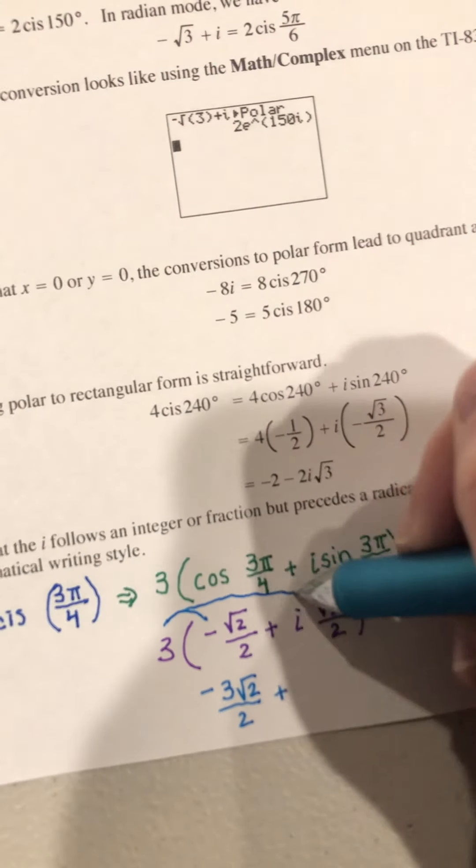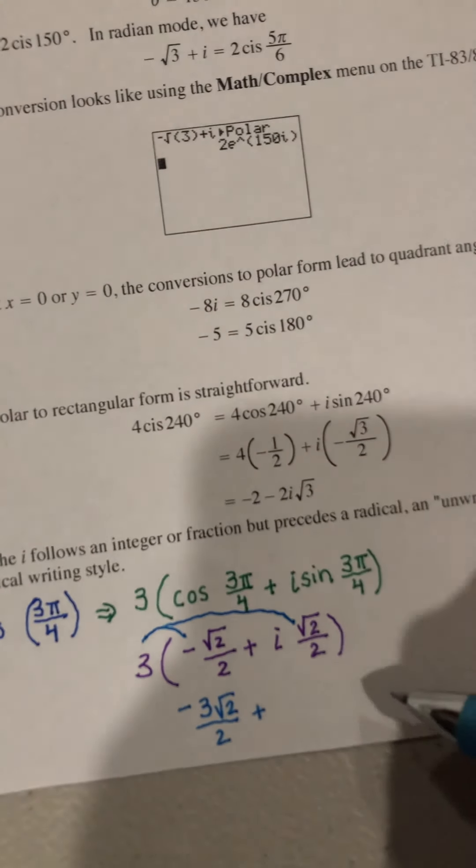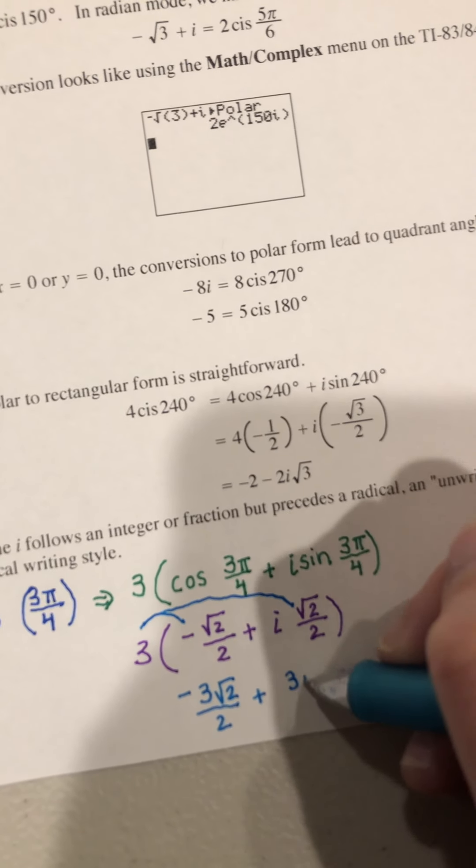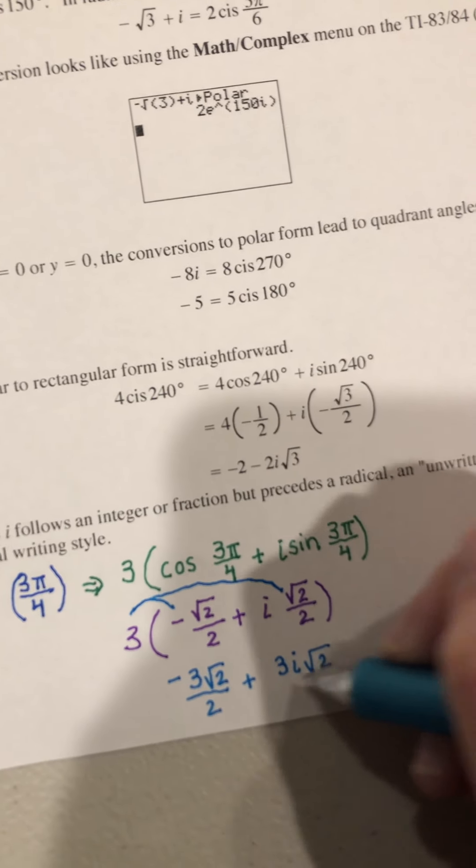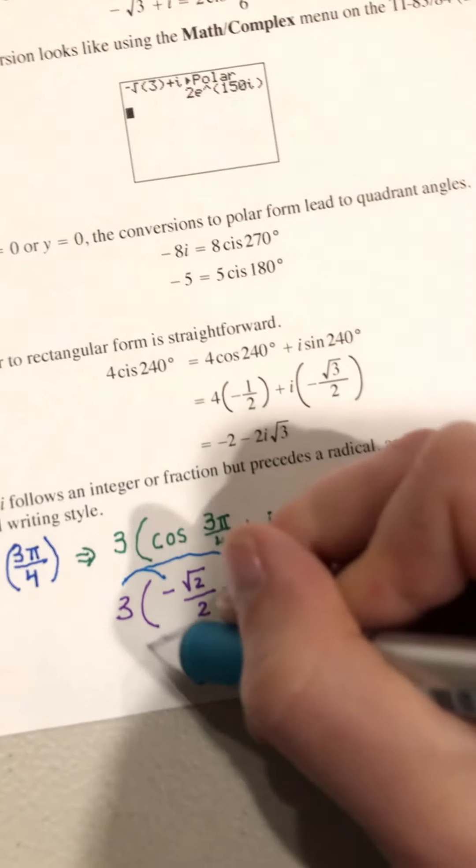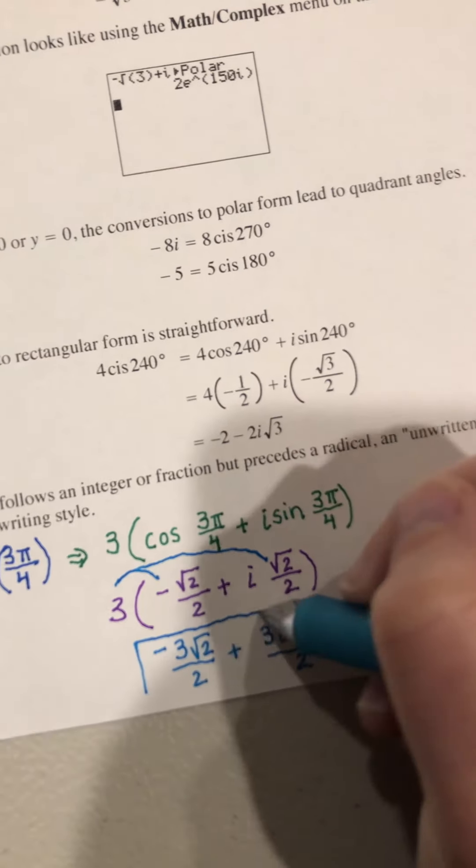distribute right there, and you have 3i square root 2 over 2. So this is your rectangular form.